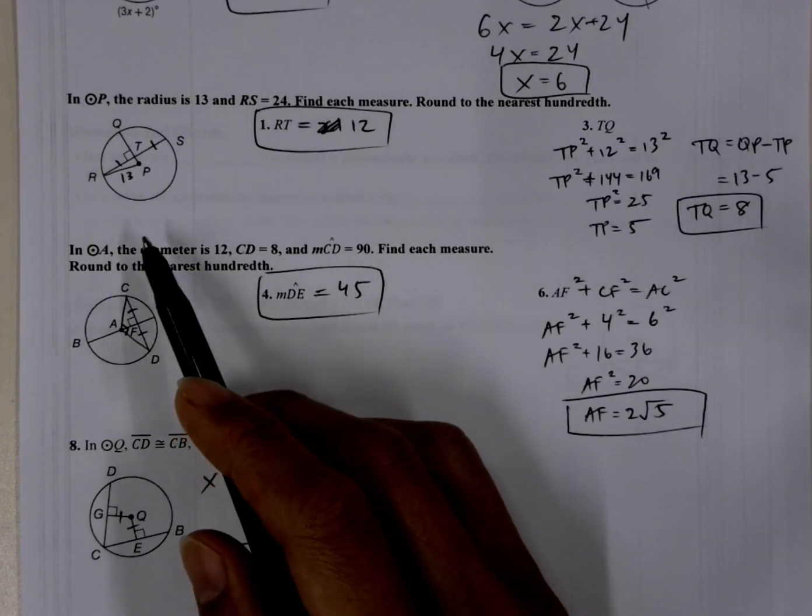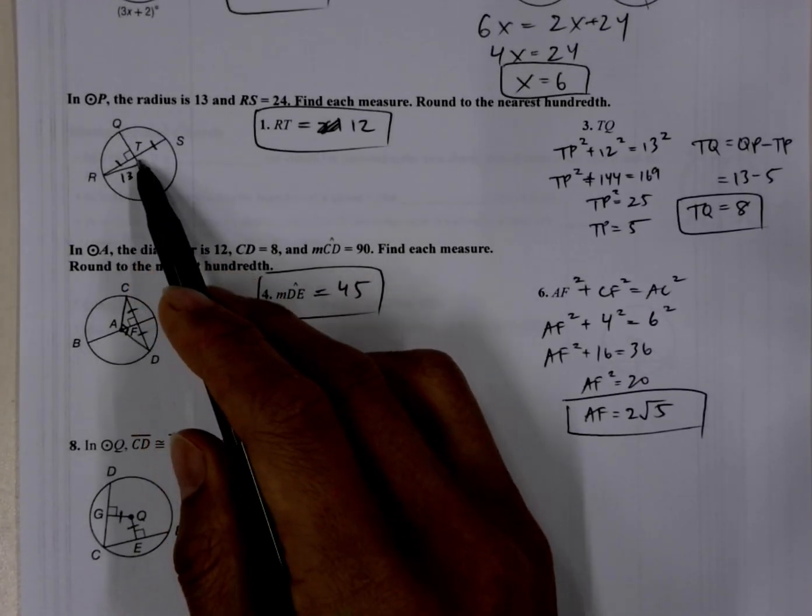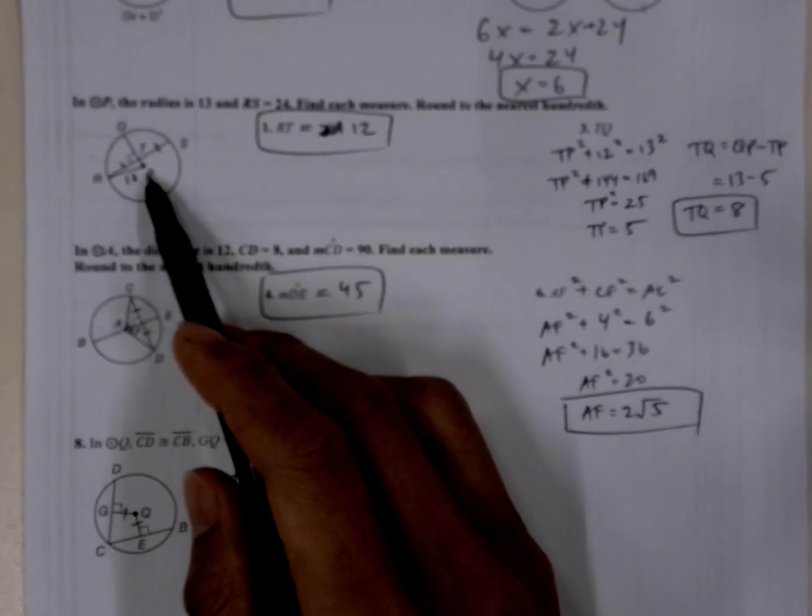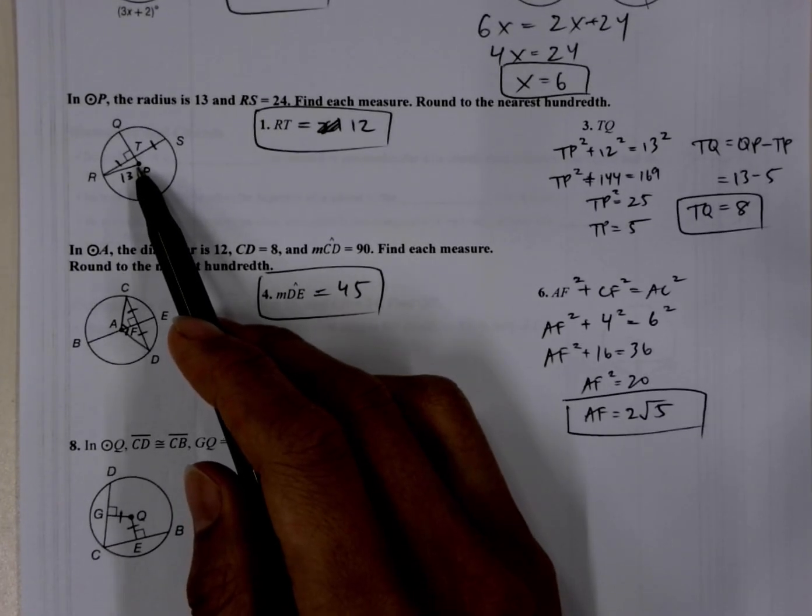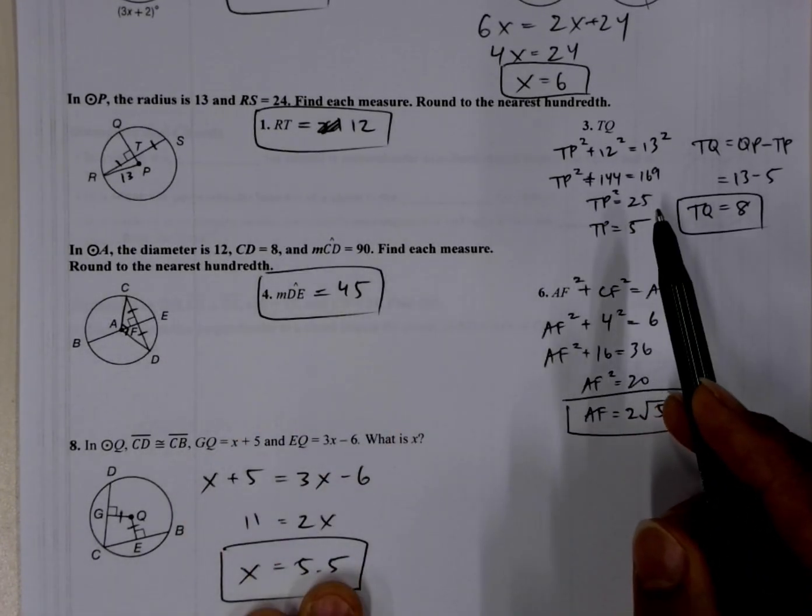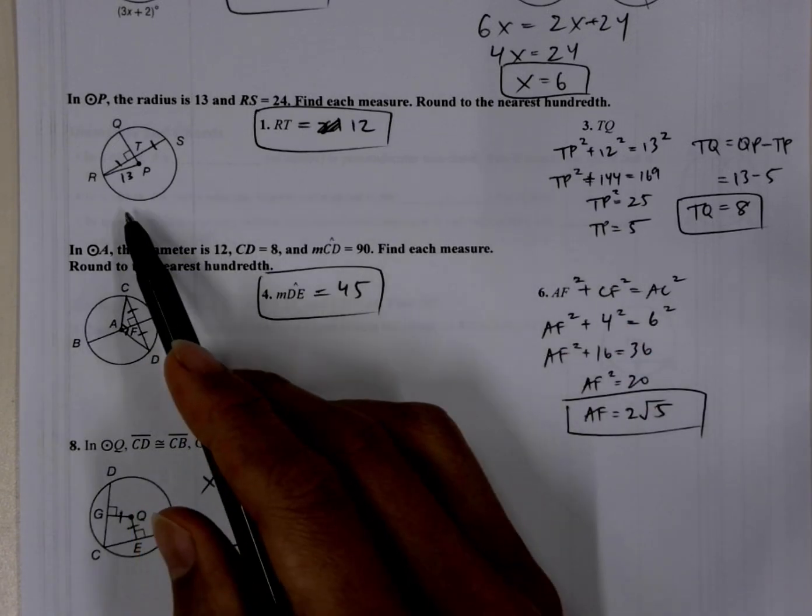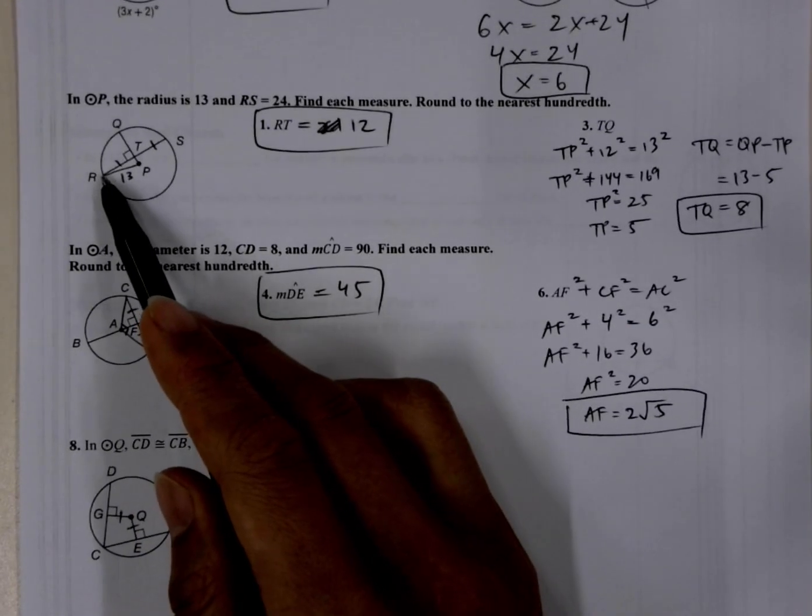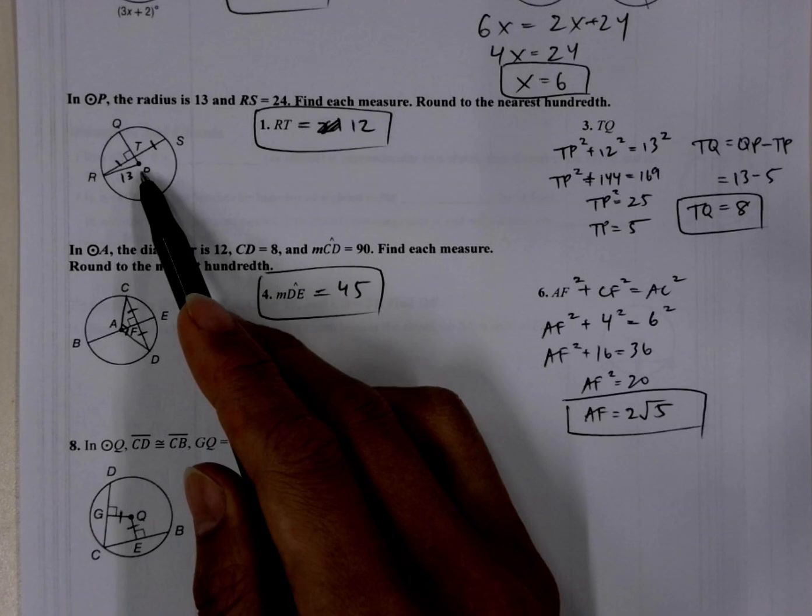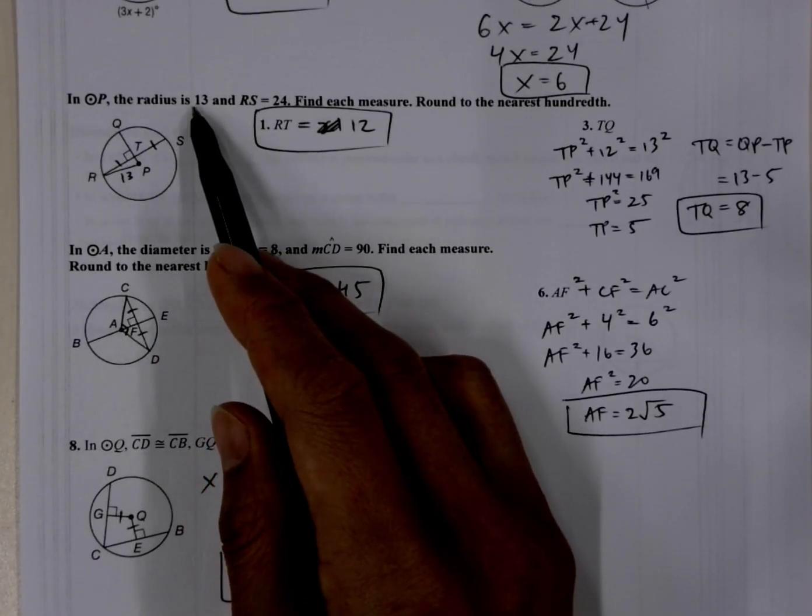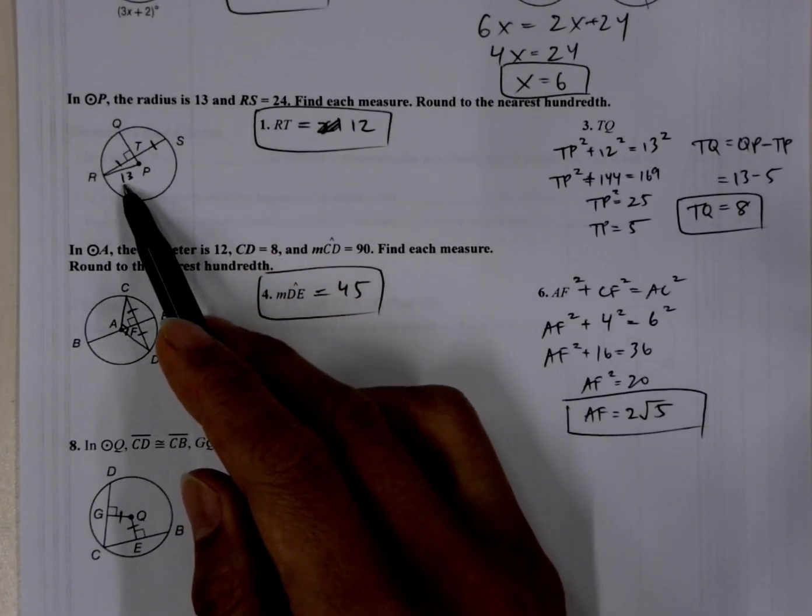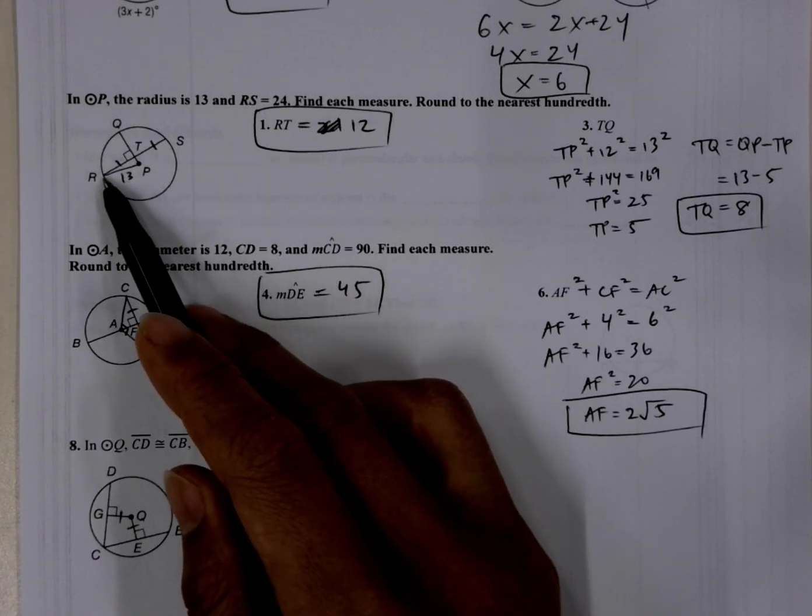And then over here, we're looking for QT. So we know that QT is equal to QP, the radius, minus TP. So we need that TP. And so again, I drew this little radius here, RP. We know it's length of 13 because it's a radius, and then we know RT is 12.